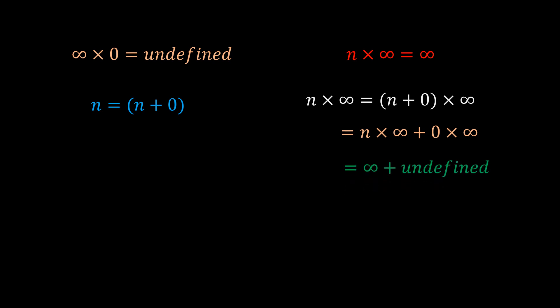If 0 times infinity is undefined, and n times infinity is infinity, we are still going to have a problem. We can write n as n plus 0. So, n times infinity is equal to n plus 0 times infinity, which is equal to n times infinity plus 0 times infinity. And this will give us infinity plus undefined. So, what is infinity plus undefined? Is it undefined or infinity? Or both? 0 times infinity has to be 0 for this equation to make sense, which will also bring its own problems as we have seen already. Or n is not equal to n plus 0. So, you see, there is a fundamental problem with math.